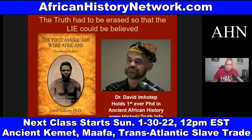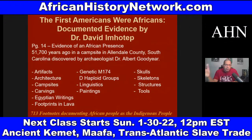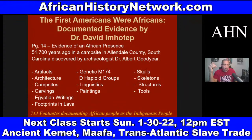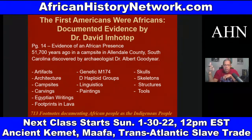On page 11 of Dr. David Imhotep's 2011 book, he deals with evidence discovered in Allendale County, South Carolina, by archaeologist Dr. Albert Goodyear of the University of South Carolina in 2004. They found 13 different types of evidence thoroughly documenting an African presence — artifacts, architecture, campsites, carvings, Egyptian writings, footprints, genetic M174D haploid groups, linguistics, paintings, skulls, skeleton structures, and tools — dating back at least 51,700 years ago.